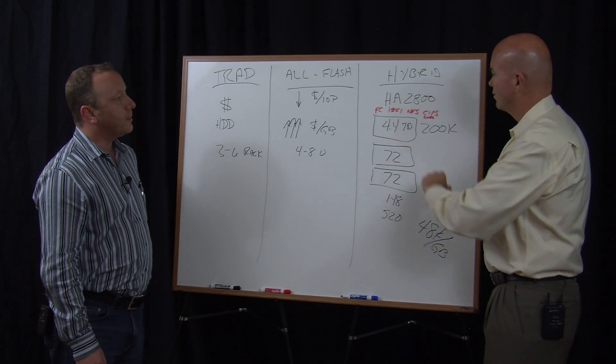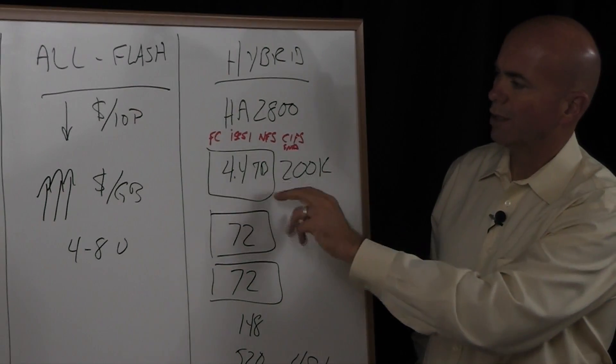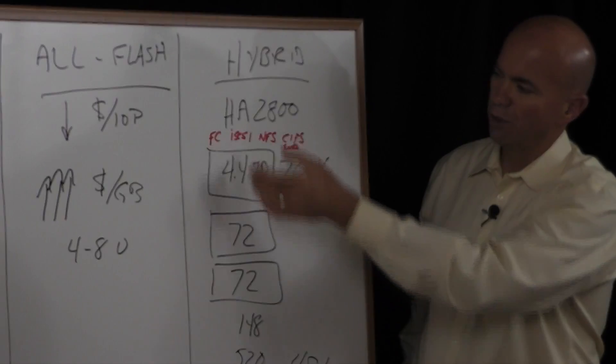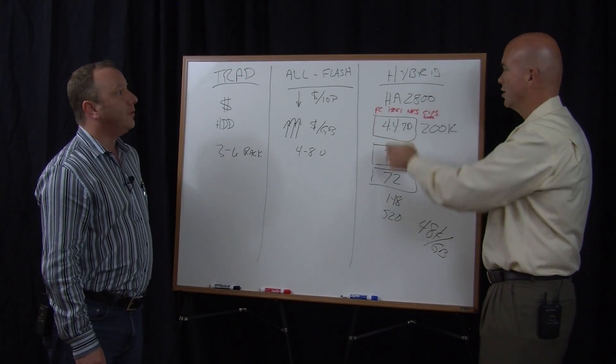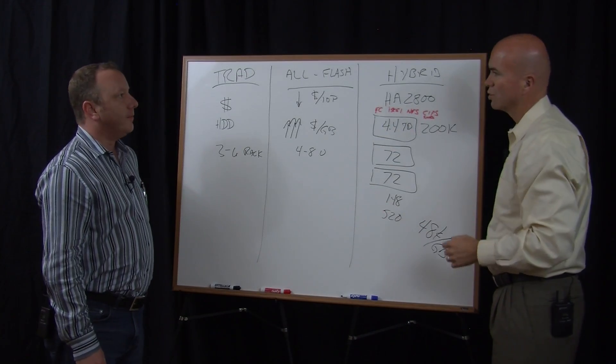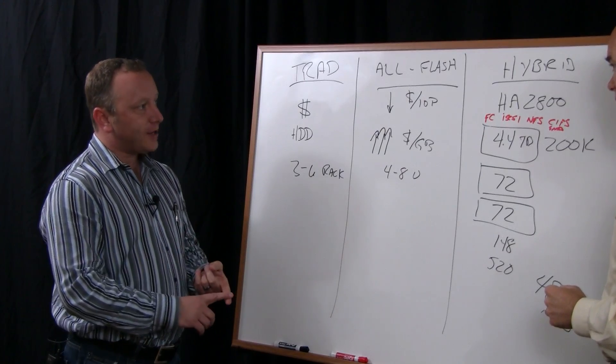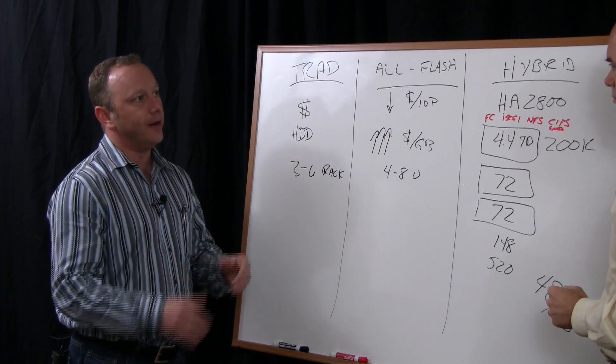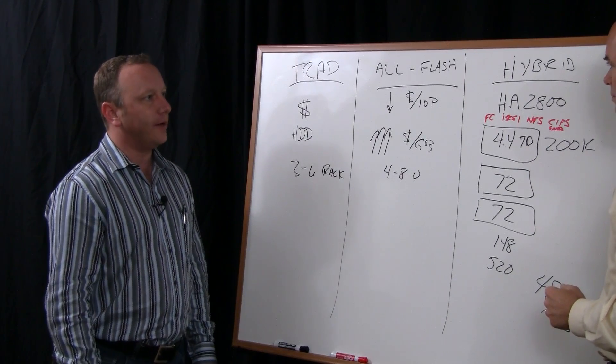Great. And then I just, we've spoken about this before, but to reiterate, I think an important differentiator for you guys here is that you're doing dedupe compression inline, catching it before it hits any of these tiers of storage. That's correct. So the flash and the spinning disk all yields the capacity reduction benefit of inline dedupe and compression.